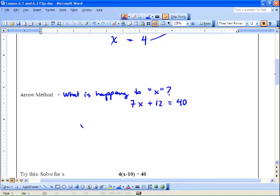What's happening to x? We start with our variable. And we ask ourselves, what's happening to it? Well, it's being multiplied by 7. 7 times x is 7x. And then what else are we doing to it here? We're adding 12 to it. So we're going to add 12.